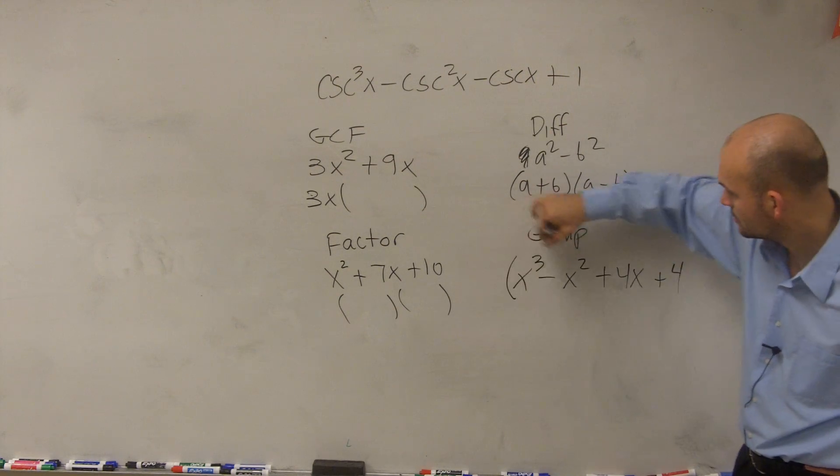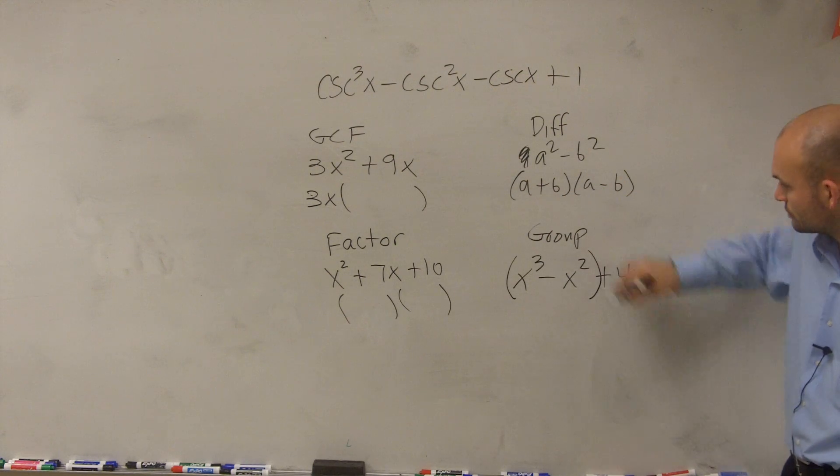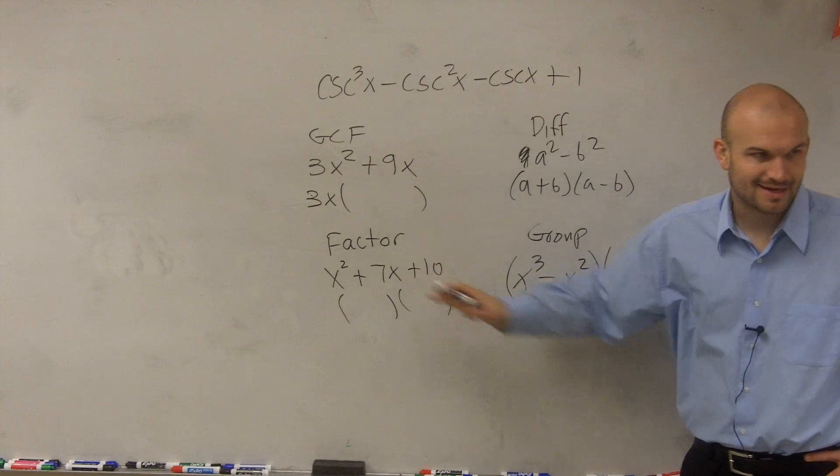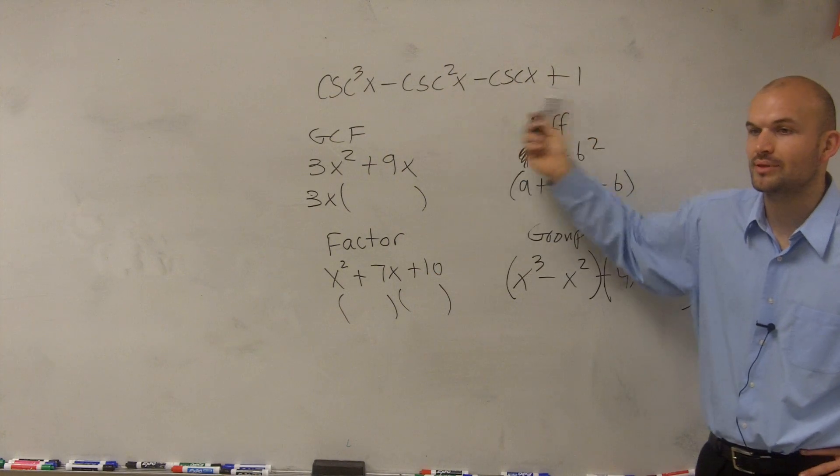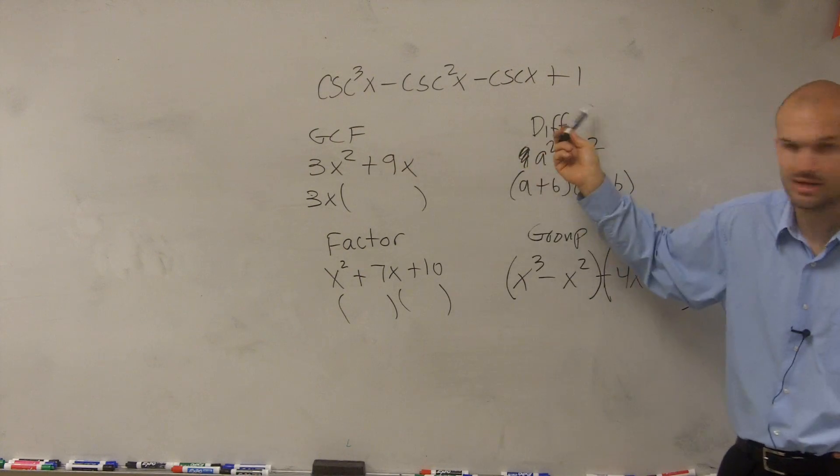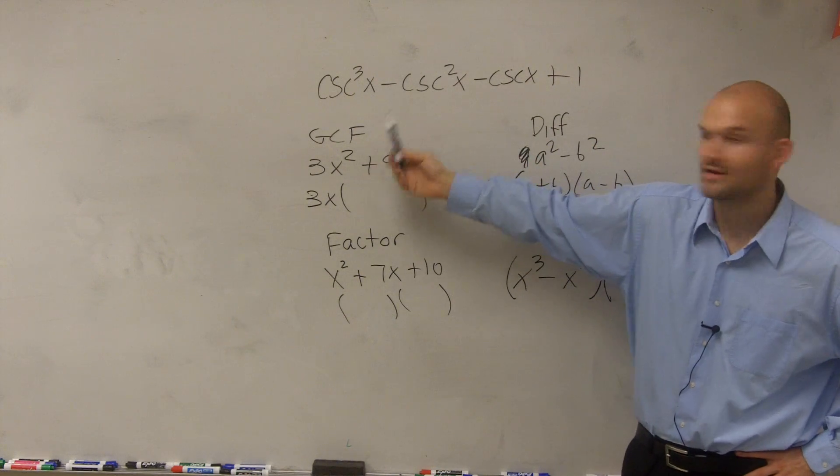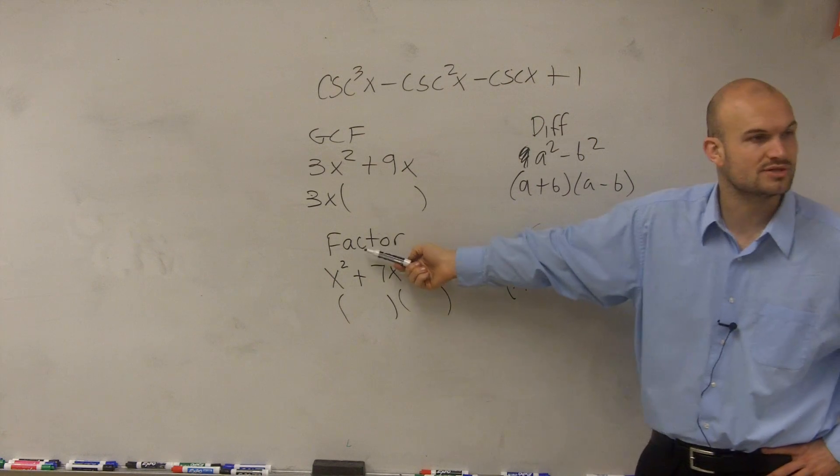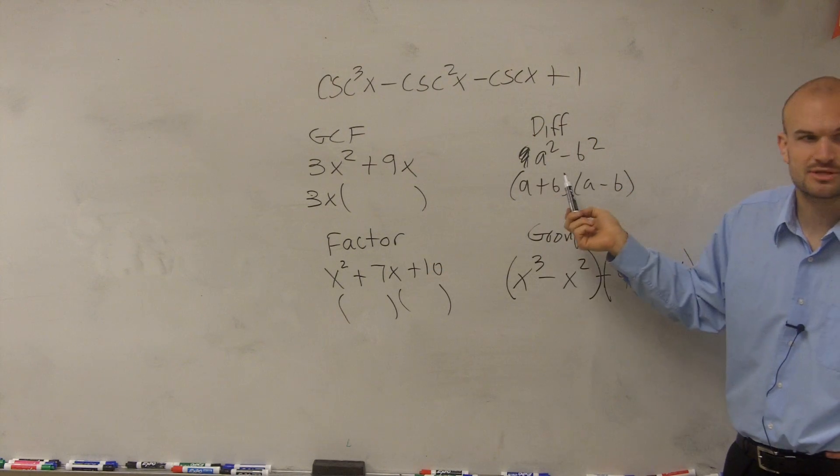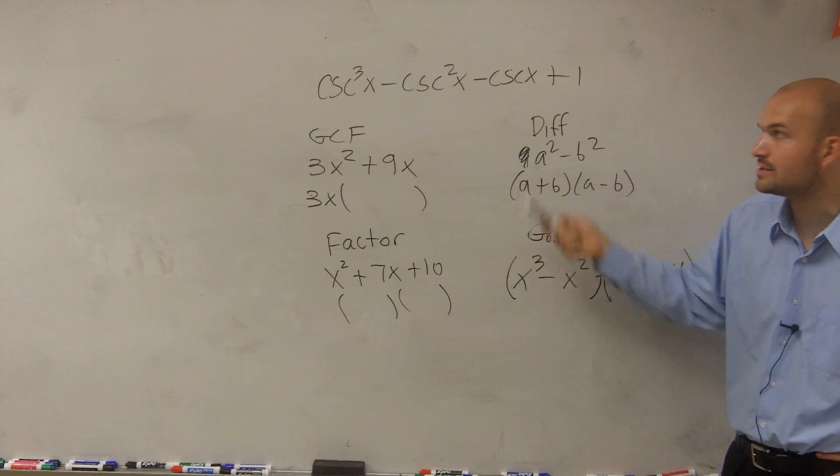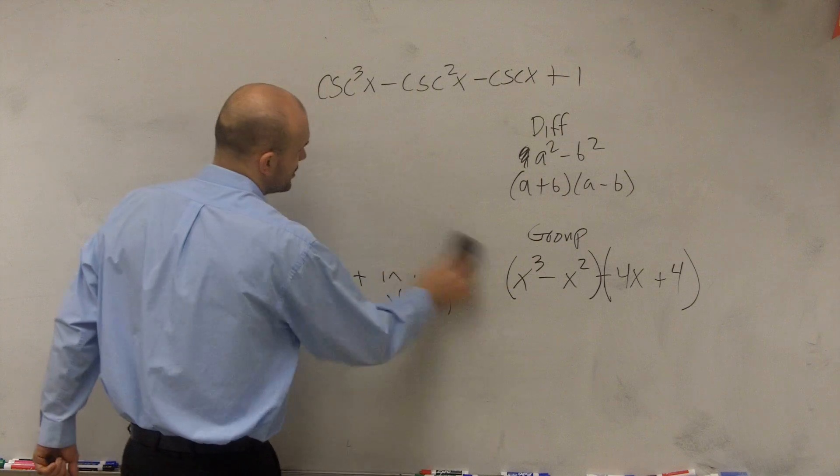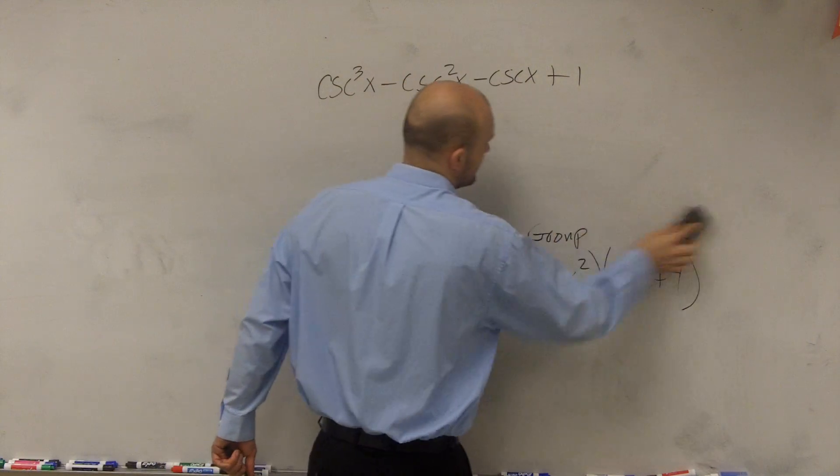And what that meant was you grouped the first two terms and you grouped the last two terms. So out of all of these techniques, what do you think I might want to apply for this one? The grouping, because they have four terms, because they don't all have a common term. So I can't do it by GCF. There's not three of them, so I can't use a factoring by a trinomial. It's not two terms, two square numbers subtracted, so I can't use difference of two squares. I'm going to want to apply the grouping technique. So let's go back through the grouping technique and I'll show you what to do.